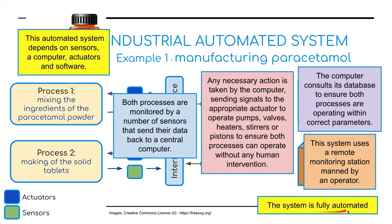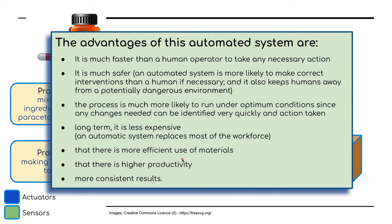This system is fully automated. The advantages of using automated systems for this particular industry: it's much faster than humans in taking any necessary action; it's much safer; an automated system is more likely to make correct interventions than a human; and it keeps humans away from potentially dangerous environments. The process is more likely to run under optimum conditions, since any changes needed can be identified very quickly. Long term, it is less expensive — there's no labor force to pay year on year. It's a more efficient use of materials, with higher productivity and more consistent results.